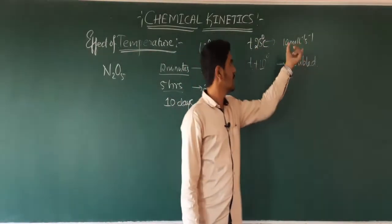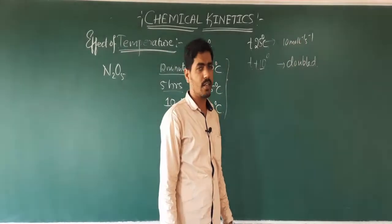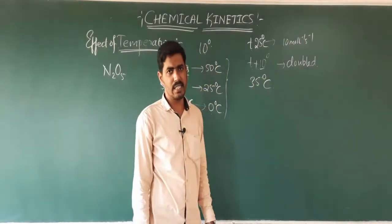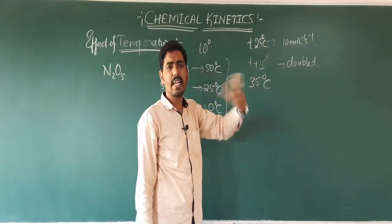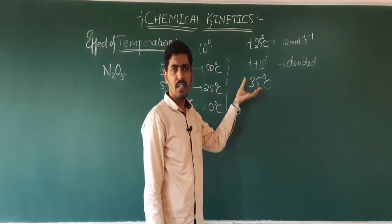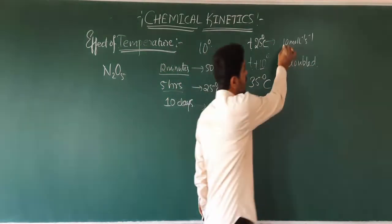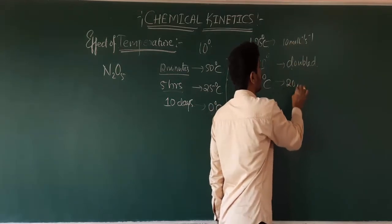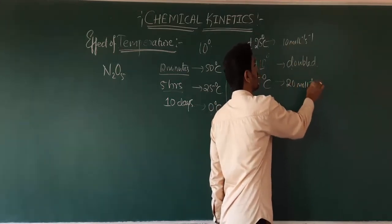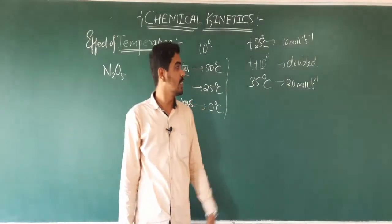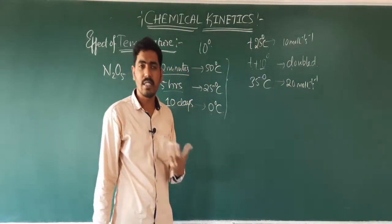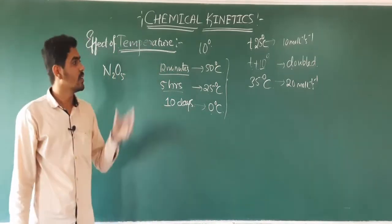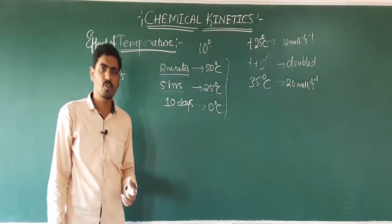For example, at 25 degrees Celsius the rate of reaction is 10 mole per liter per second. If I increase the temperature by 10 degrees, the rate of reaction doubles. For every rise of 10 degrees, the rate of reaction doubles — approximately 2 to 3 times increase.